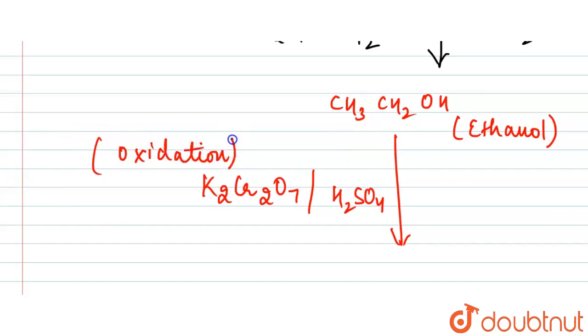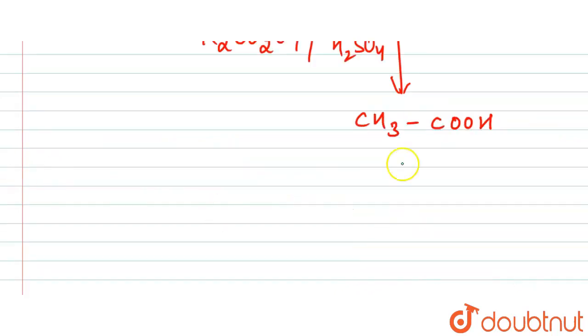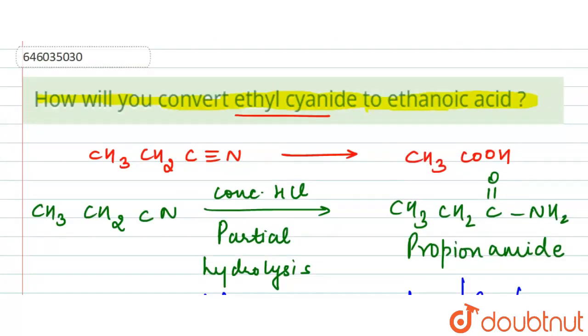So here what we will get is CH3COOH. So we have got our required product, that is the ethanoic acid, and it is also known as acetic acid. So this is our required answer, this is our required conversion. Thank you.